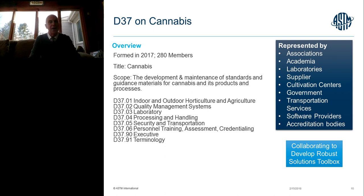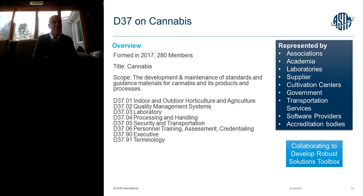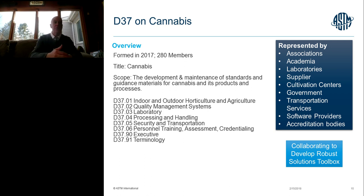This slide currently shows 280 members, though it's a little dated — we now have over 350 members representing the stakeholder community. A lot of the work takes place within the subcommittees. The group voted to break down cannabis activity into subcommittees on horticulture and agriculture, quality management systems, laboratory practices, processing and handling, security and transportation, personnel training, assessment and credentialing, and terminology. The executive committee consists of elected officers from the stakeholder community.